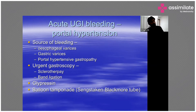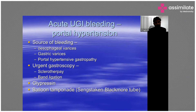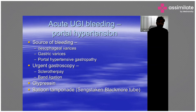After Mallory-Weiss tears comes portal hypertension-induced bleeding — increased pressures in the portal system, usually a consequence of chronic liver disease. Causes of bleeding include esophageal or gastric varices and portal hypertensive gastropathy (PHG), which presents as punctate areas of bleeding throughout the stomach and sometimes the duodenum.